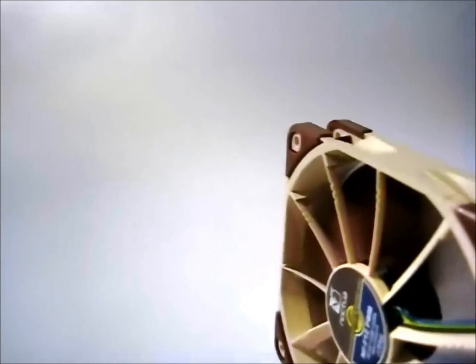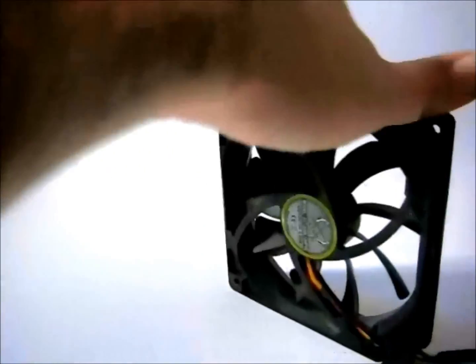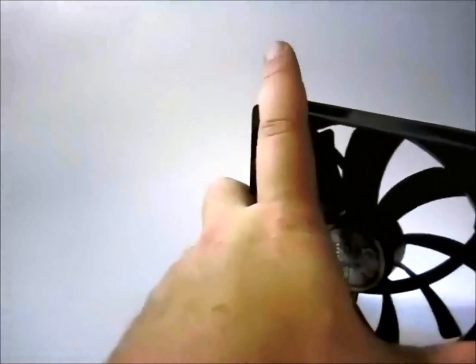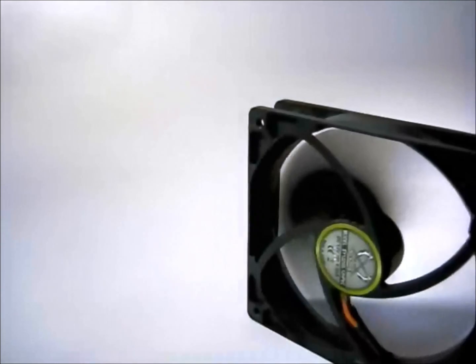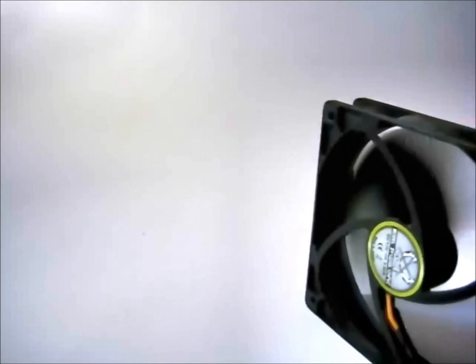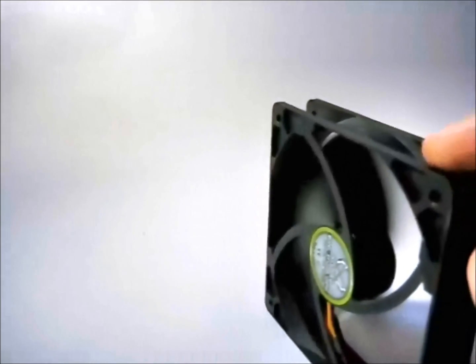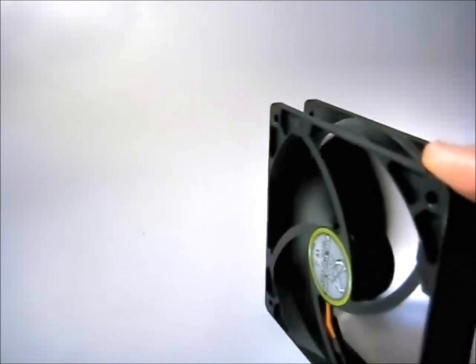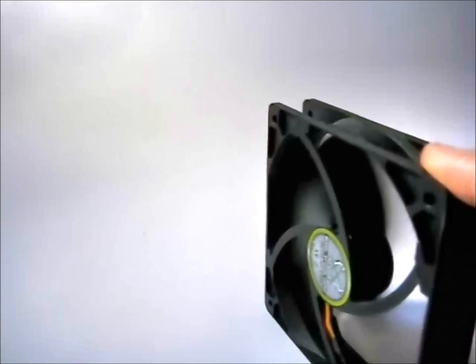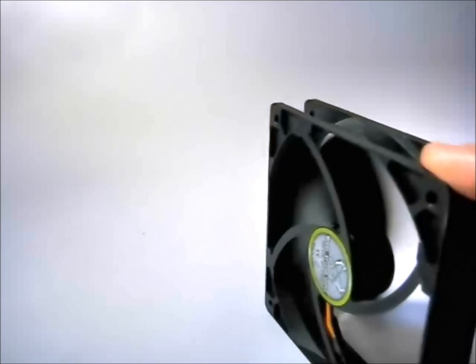And then what we're going to do is we're going to unplug this and we're going to plug in the Scythe fan and see how noisy a regular case fan can be. So here we are with the Scythe fan. This is a regular case fan and here we are. We're going to plug in the Scythe fan. Now this is running at 1900 RPM. So quite a big difference in the volume coming off the fan.